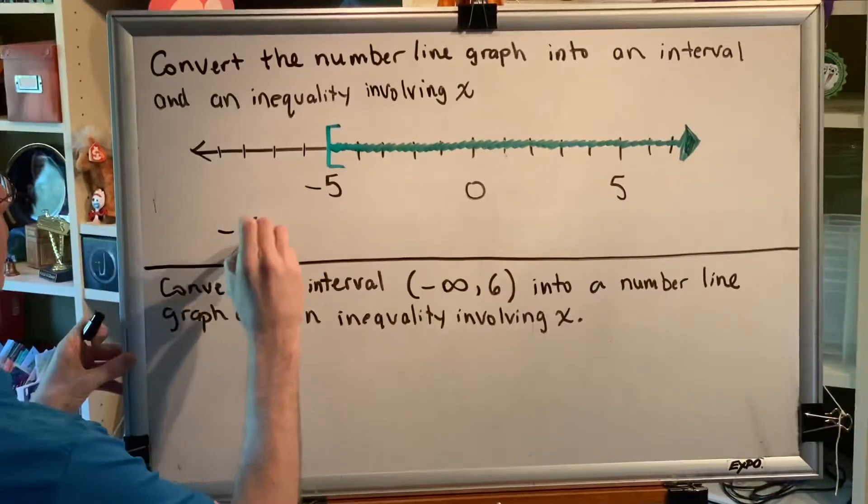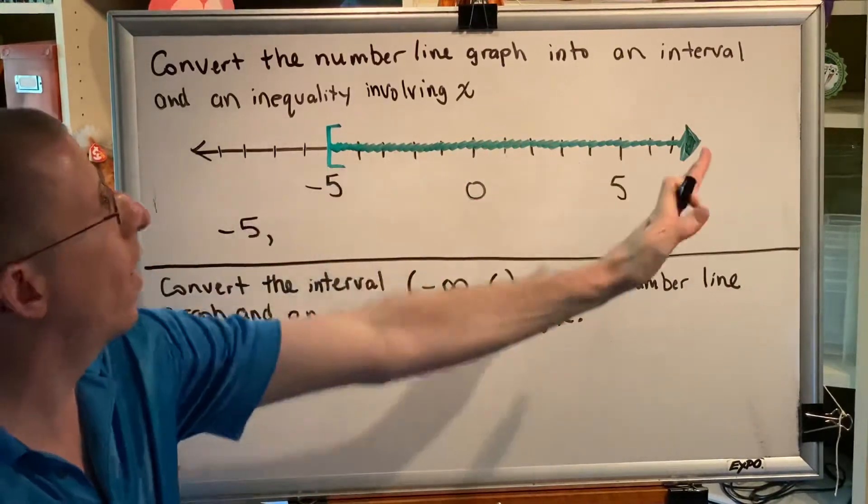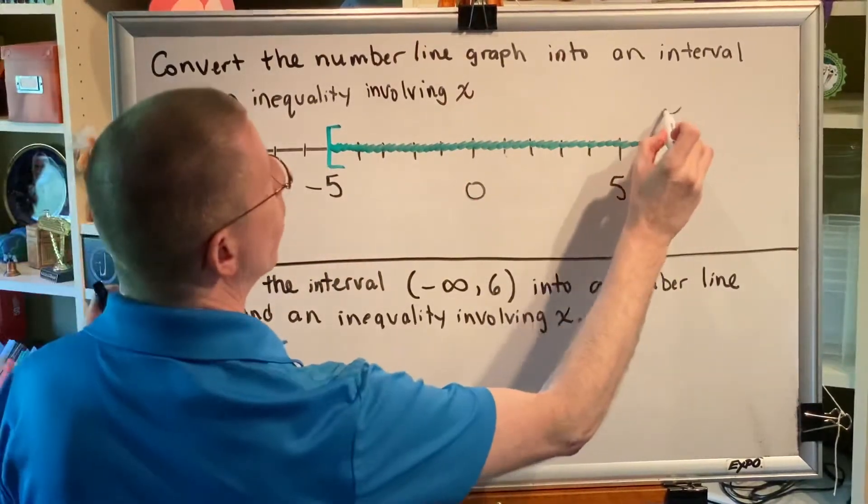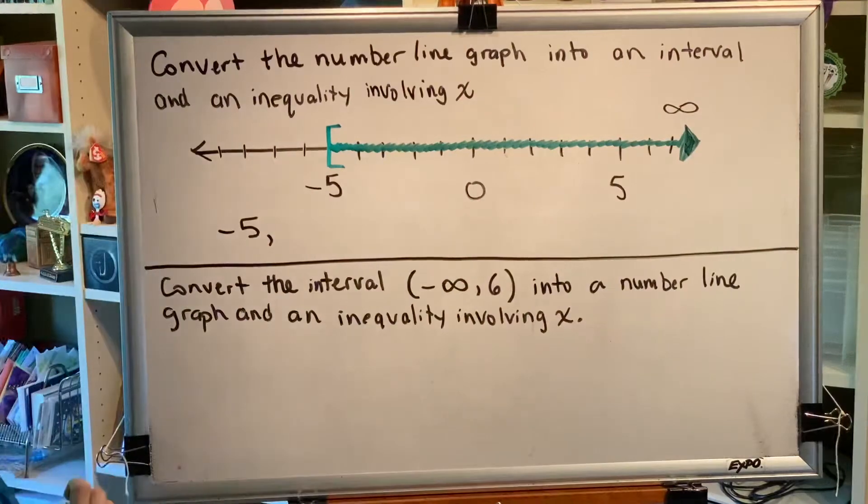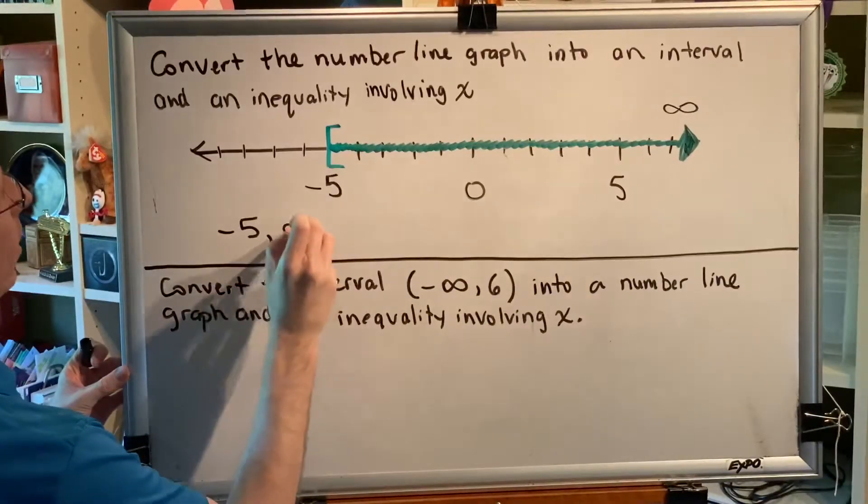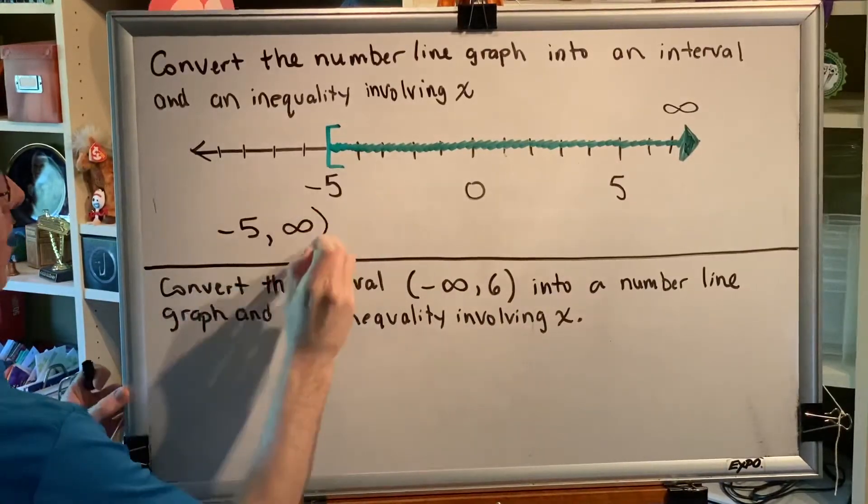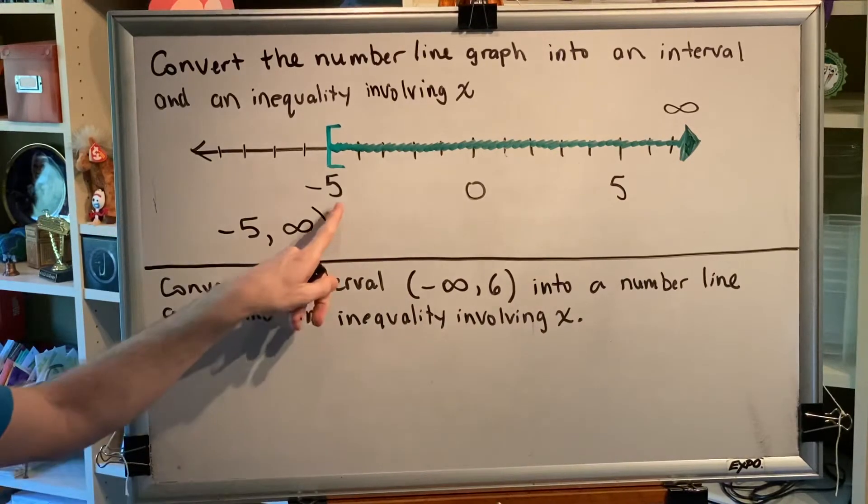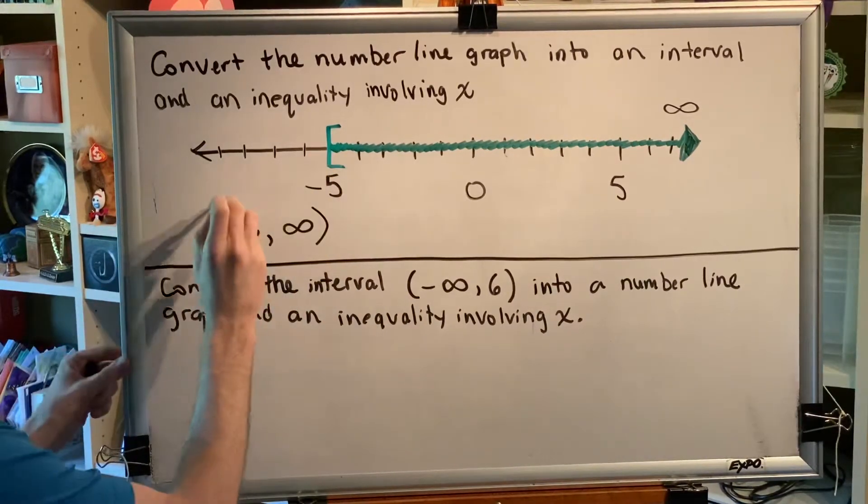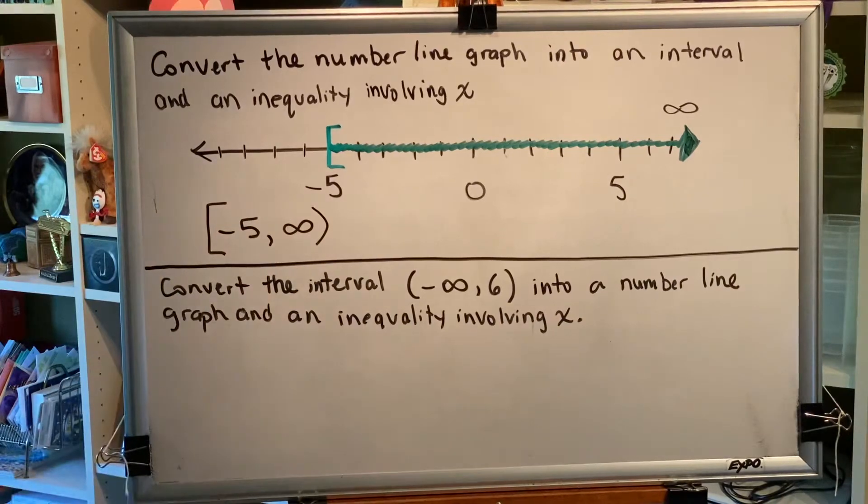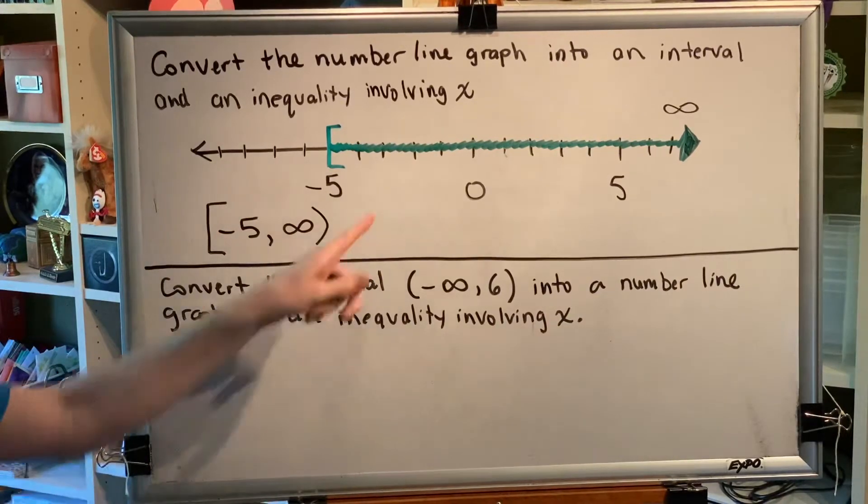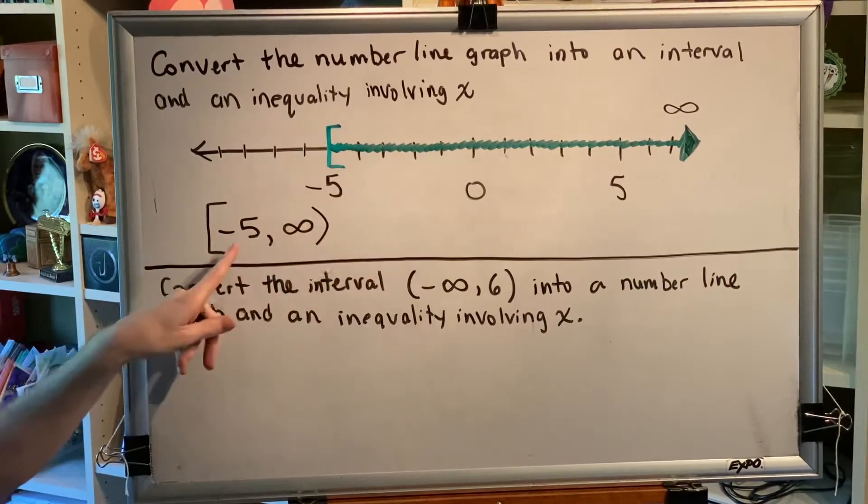So the shaded value closest to the left side is negative 5, and because the shading goes forever to the right, the rightmost value of our interval will be infinity. Infinity and negative infinity always get the parenthesis symbol next to them. On our number line, the negative 5 has a bracket, therefore our interval does as well. So to write this number line graph as an interval, we would say bracket negative 5 comma infinity parenthesis.